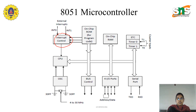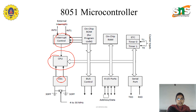The main component is the CPU, that is the Central Processing Unit, which performs all arithmetic and logical operations. We have the oscillator, which gives a maximum of 12 MHz, with an oscillator range of 4 to 30 MHz. We also have two 16-bit timers — Timer 0 and Timer 1 — with T0 and T1 as counter inputs, used for counter purposes.